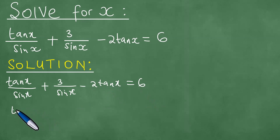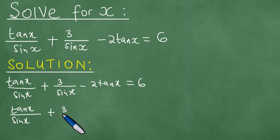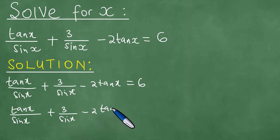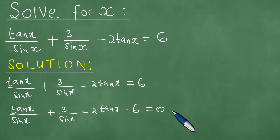The next thing we write down is tan(x)/sin(x) + 3/sin(x) - 2tan(x) - 6 = 0. What we've done is transpose the 6 from the right-hand side of the equation to the left-hand side of the equation, as shown there.